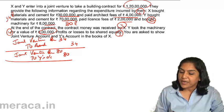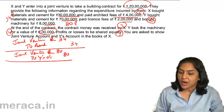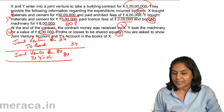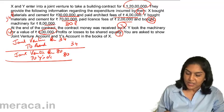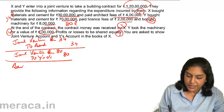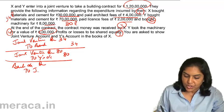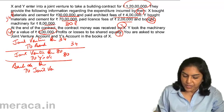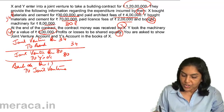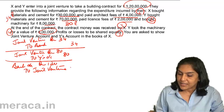Contract money received by X is 1 crore 20 lakhs. X receives, so Bank Account is debited. This is income of the joint venture, therefore credit Joint Venture. Entry: Bank Account debit to Joint Venture, 120 lakhs.